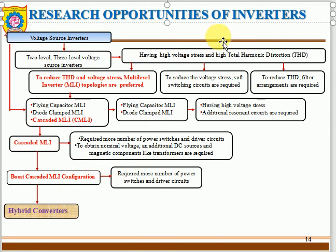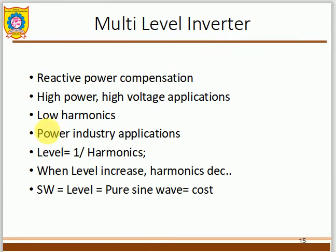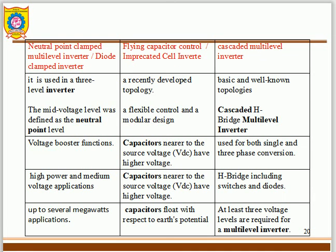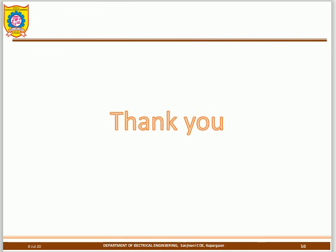The benefits of multi-level inverters include low harmonics and suitability for high-power, high-voltage applications. There are three main types: cascade multi-level inverter, diode clamp, and flying capacitor. A comparison of these multi-level inverter types is shown in the slide. That covers the overview of this unit.